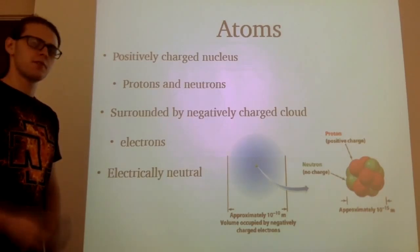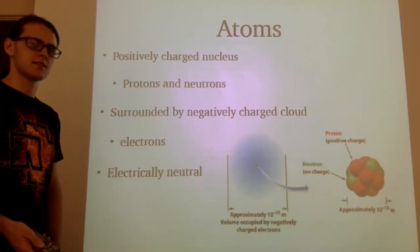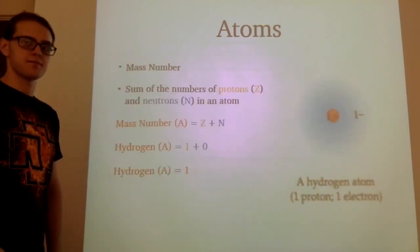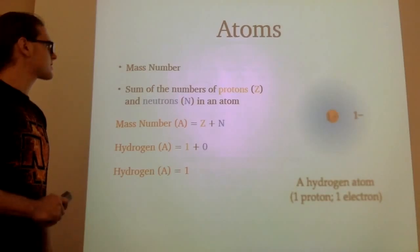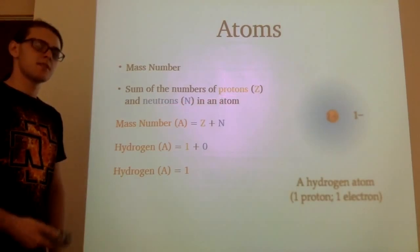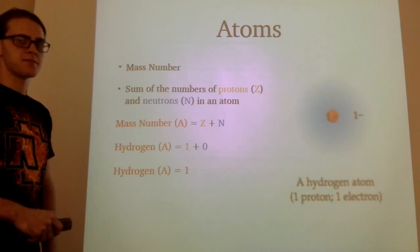So if we want to quantitatively analyze this, how would we do that? We look at the mass number. The mass number is simply Z plus N, which is protons plus neutrons. Let's pick the first element of the periodic table, hydrogen.